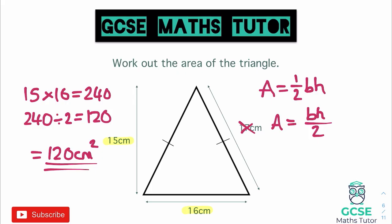With larger numbers you can save time by using the first method: halve the base before multiplying by the height. Instead of doing 15 times 16 then dividing by two, you could halve the 16 to get 8 and do 8 times 15, which gives 120 straight away. Either method is fine — you do base times height divided by two, or half times base times height.